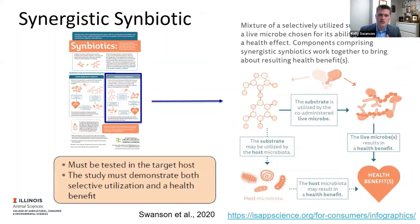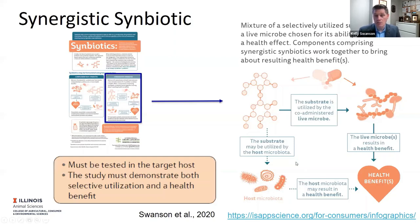A synergistic symbiotic is a little bit different. Here we're not saying probiotic and prebiotic — we're saying a live microbe and a substrate. The solid lines in the figure represent what must happen: the substrate must be utilized by the co-administered live microbe, and that must result in a health benefit. The substrate might also be utilized by the host microbiota, which may also help result in a health benefit. In this case, they must be tested together in the target host, and the study must demonstrate both selective utilization and the health benefits.